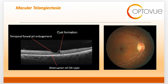Macular telangiectasia, or idiopathic juxtafoveal telangiectasia type 2, is a bilateral disease of unknown cause with characteristic alterations of the macular capillary network. Fundoscopically, mactel is characterized by telangiectatic vessels in the juxtafoveolar region, most commonly temporal to the fovea of both eyes.